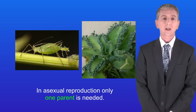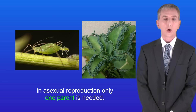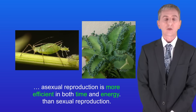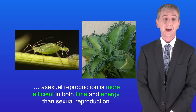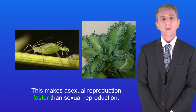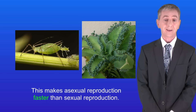Now let's look at asexual reproduction. In asexual reproduction only one parent is needed. So because there's no need to find a mate, asexual reproduction is more efficient in both time and energy than sexual reproduction. This makes asexual reproduction faster than sexual reproduction.